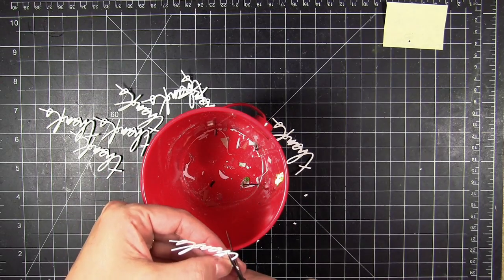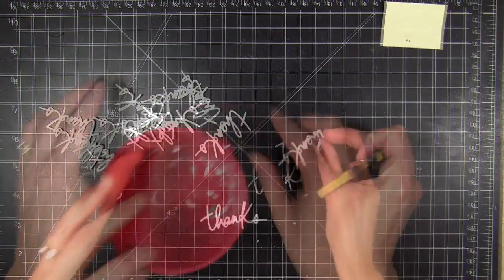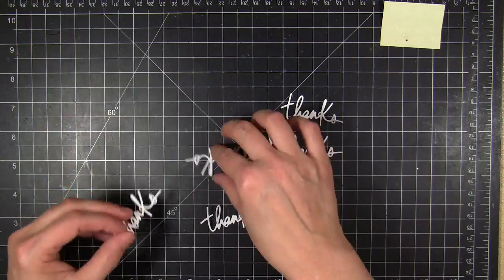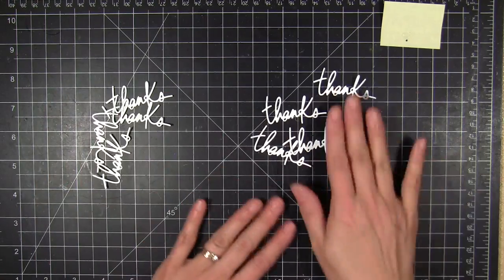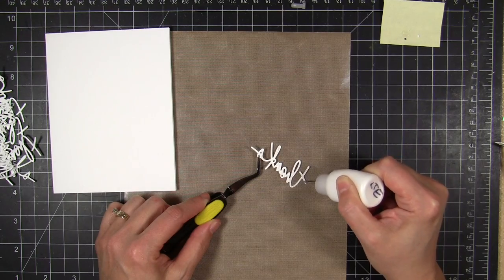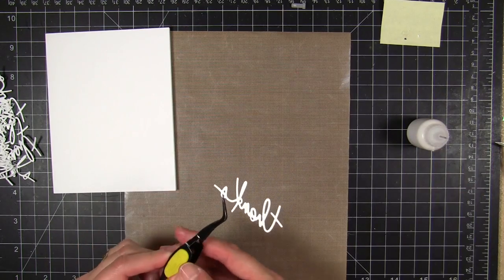So now I have a whole bunch of these thanks and I'm just going to trim the cross bar at the top of the T there so that they're pretty uniform in length instead of some of them being longer than others. So now that I have those trimmed down, I have a whole bunch of die cut thanks at my disposal.